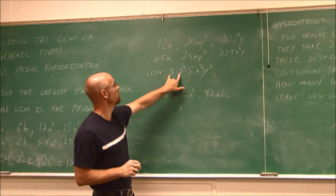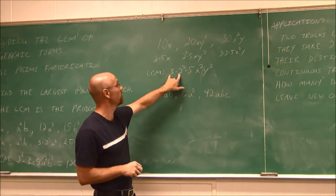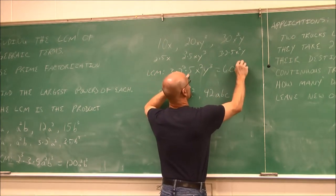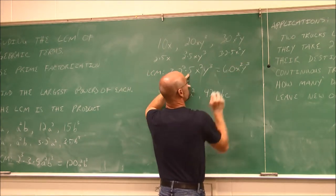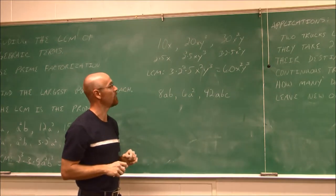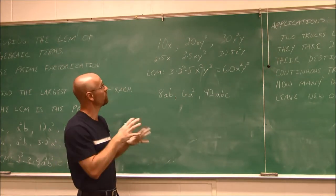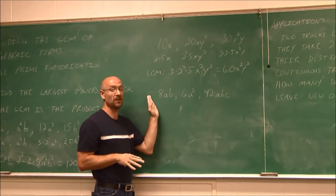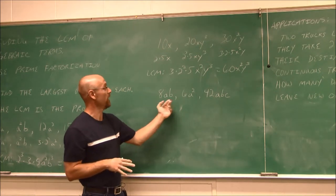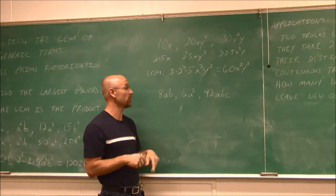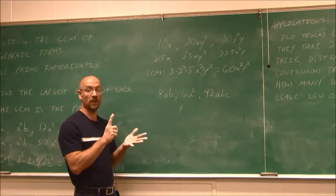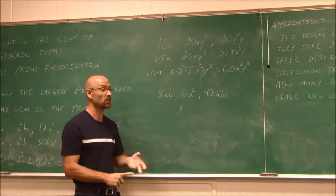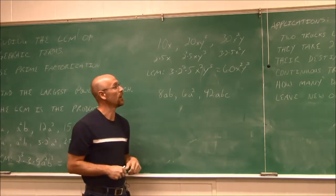And there we have that. So now I can put it back together. 2² is 4 times 3 is 12 times 5 is 60. 60 x²y³ is my least common multiple. So hopefully that's starting to make sense, and you can try this one on your own. Factor 8, 6 of 42, find the LCM of those, and then determine what's the most number of A's I have, what's the most number of B's, what's the most number of C's, the variables that we have.